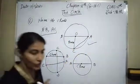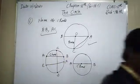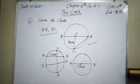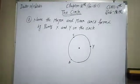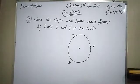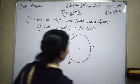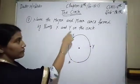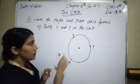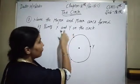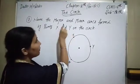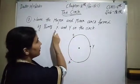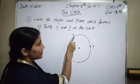Now come to the next question of this worksheet. The next question is: name the major and the minor arcs formed by the points X and Y on the circle. Here are two points on the circle and we have to find out the major and the minor arcs. Here is X and Y given.